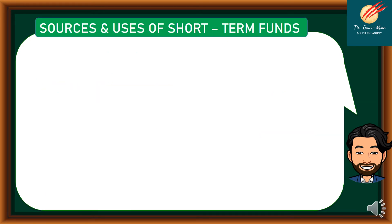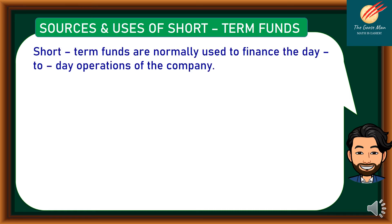Let's discuss the sources and uses of short-term funds. Short-term funds are normally used to finance the day-to-day operations of the company. Number one is supplier's credit. Suppliers of raw materials and merchandise are the best sources of short-term working capital, which is why a good relationship has to be nurtured with suppliers.